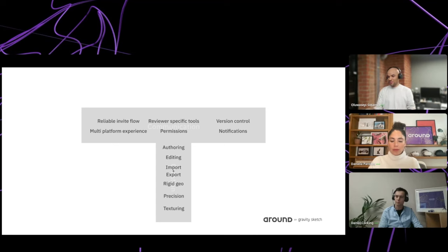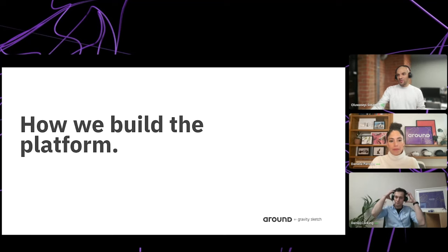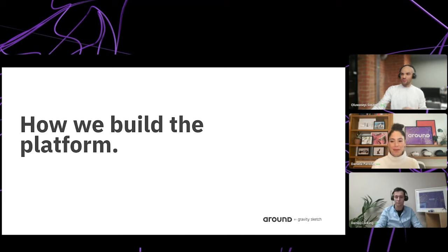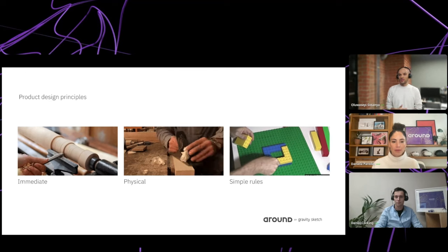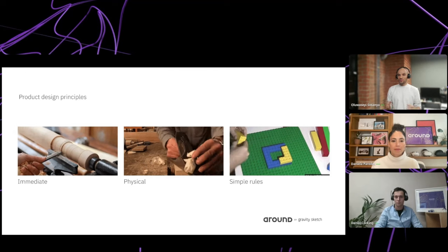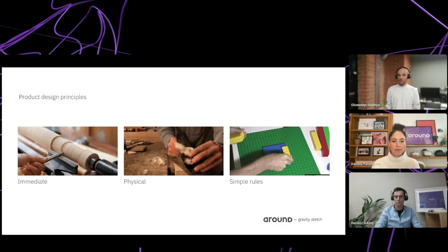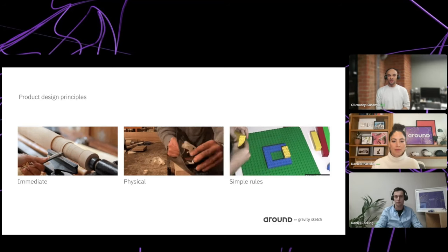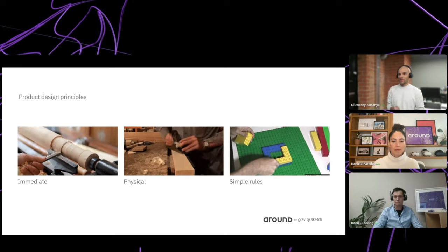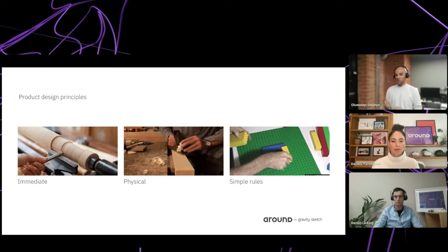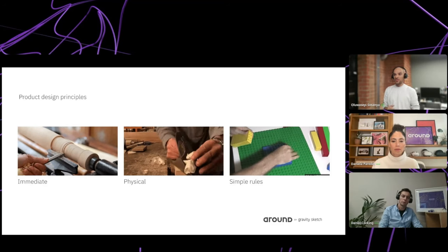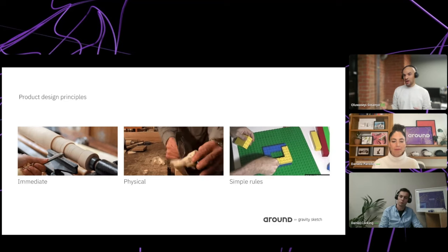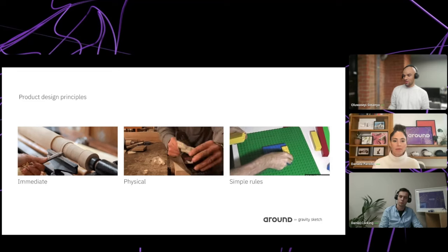Through your support, we've been building in the right way. Our approach: first, product design principles — through observing how creators work in the physical world. Things with immediate, direct results had joy. Things that were physical seemed pleasant. And things with a simple set of rules allowed both creative and non-creative people to get into a creative mindset faster. These were the core pillars to how we built Gravity Sketch.